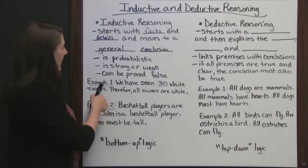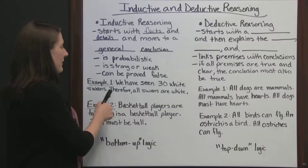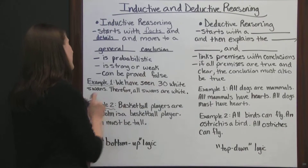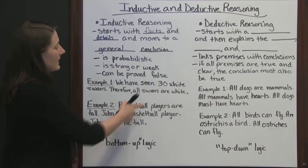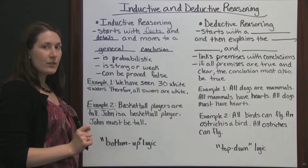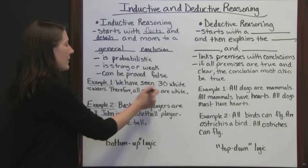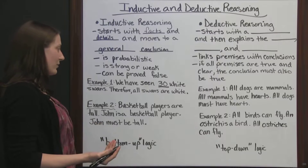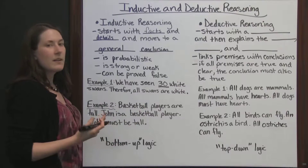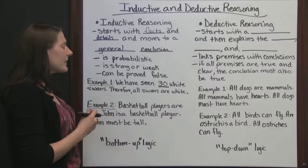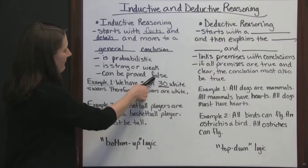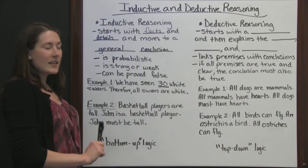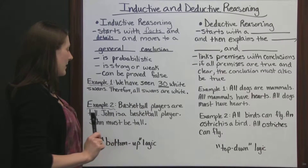Let's look at some examples. We have seen 30 white swans — therefore, all swans are white. Based on the 30 examples that we've seen, this statement makes sense. This conclusion drawn using inductive reasoning would make sense. Is it true? No. Not all swans are white; you've got other colors. This is a false conclusion, but we did use inductive reasoning to get there, basing our conclusion on our examples.